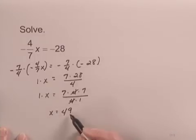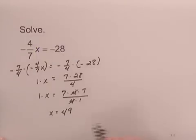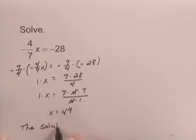If we substitute 49 for x in the original equation, we would see that it is the number that checks. So the solution is 49.